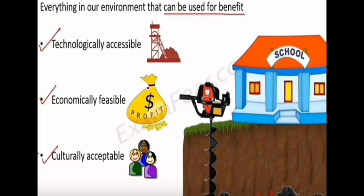The first condition is technologically accessible. As you can see in this picture, there is coal beneath the ground. To extract that coal we need technology, and if we have it we can extract it; if we don't, we cannot.